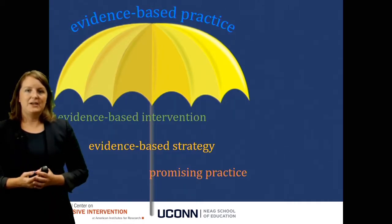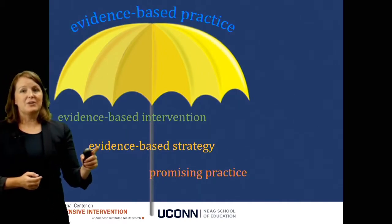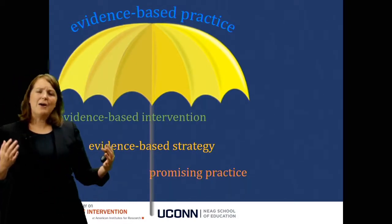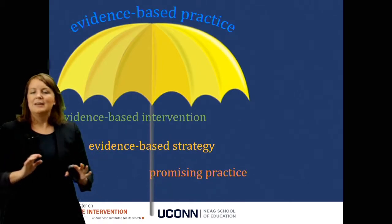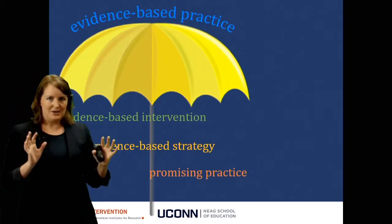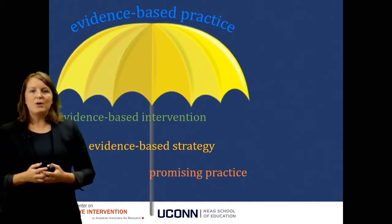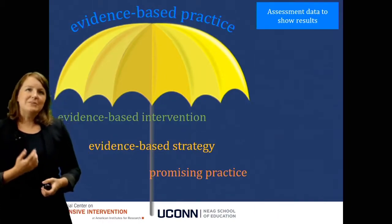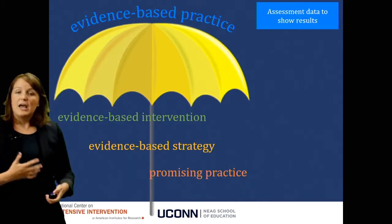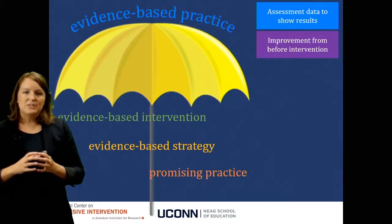We've just done an activity related to evidence-based practices and the differences among evidence-based interventions, evidence-based strategies, and promising practices. Now one question you might have is: how do you know if something has evidence? This is not a research course — it's a mathematics course — so I'm not going to focus a ton on this. But I'll briefly talk about what I look for. The first thing I always want to think about is: is there assessment data that shows results? This might come in several forms — you might see improvement from before the intervention, such as a pre-test and a post-test showing significant improvement.